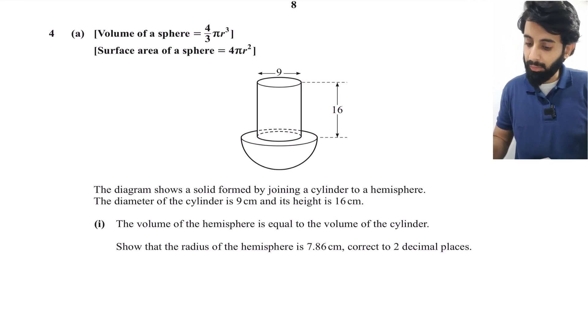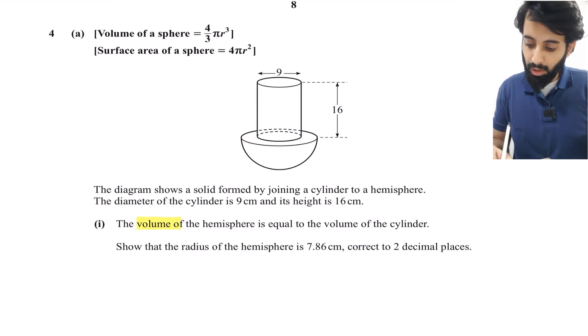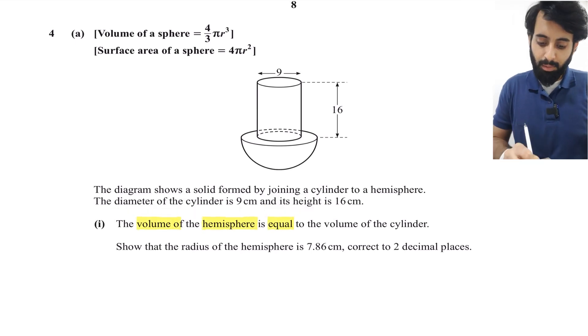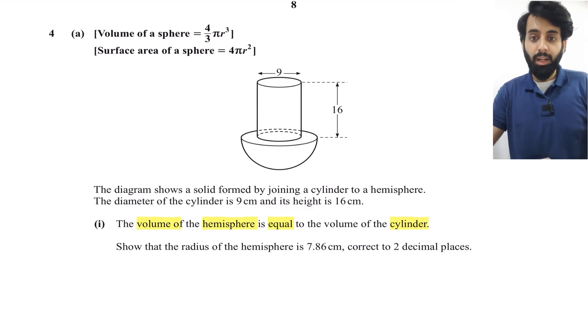The volume of the hemisphere is equal to the volume of the cylinder. This is important. If you pull out the official Cambridge syllabus guide, you'll notice there are some shapes for which you'll be given the formula, so you don't actually have to memorize those.